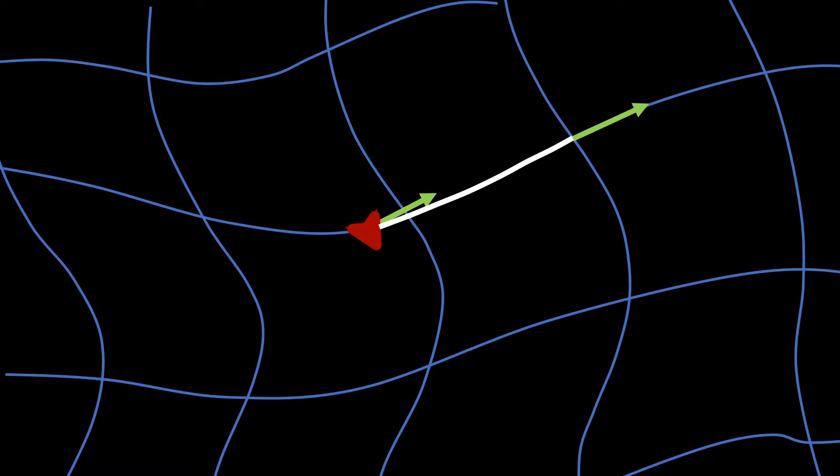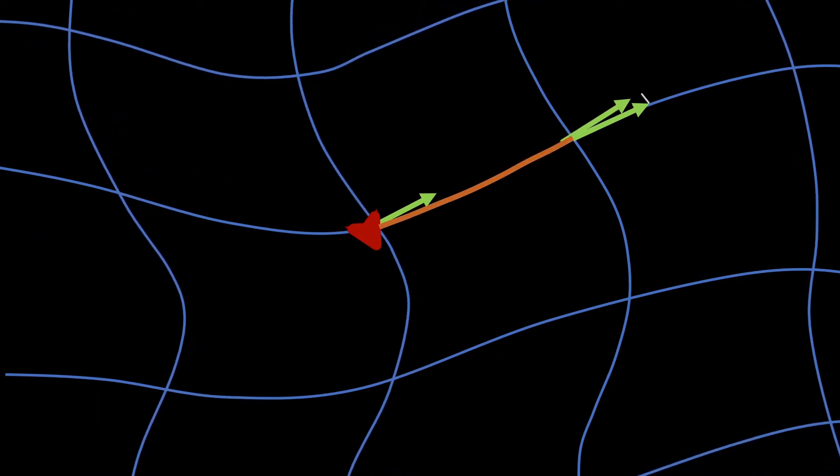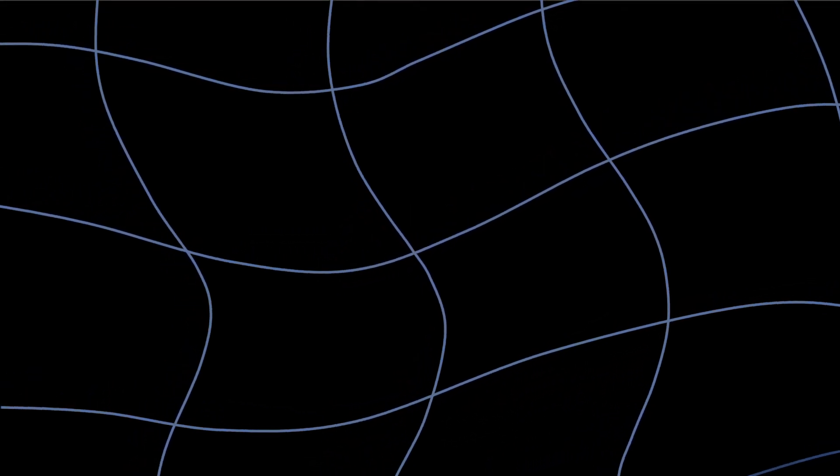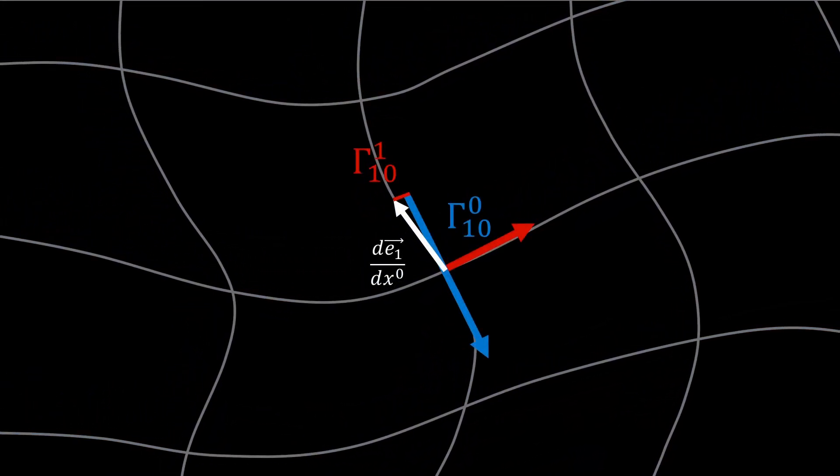For each coordinate, this gives us a new quantity which indicates how the basis vectors vary along the coordinate system. This variation is expressed as a vector that is the derivative of the basis vector with respect to the coordinate in question.